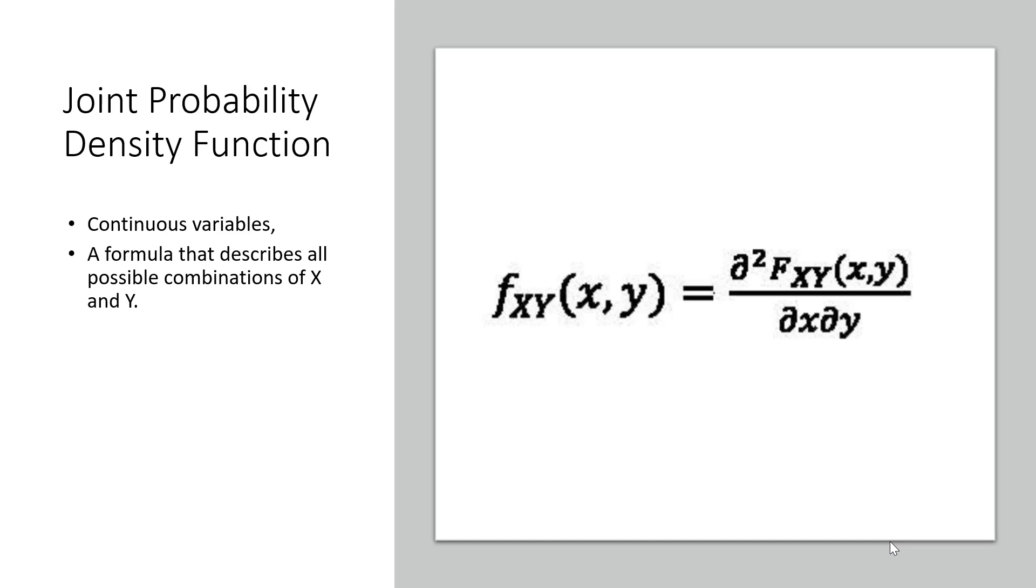If we have two random variables, X and Y, we can define the joint PDF as the partial derivative of a function of X and Y with respect to X and Y. Finding partial derivatives is a fairly advanced concept in calculus, so I won't go over that here.